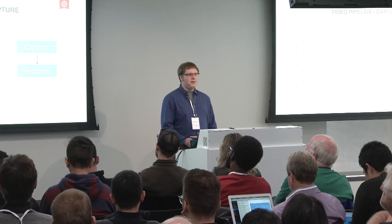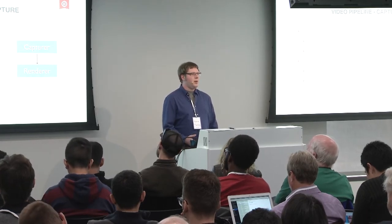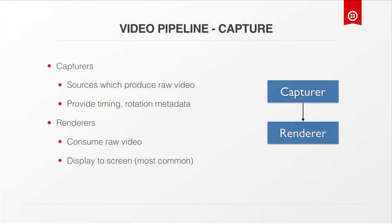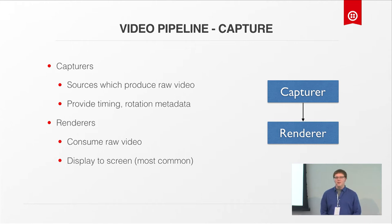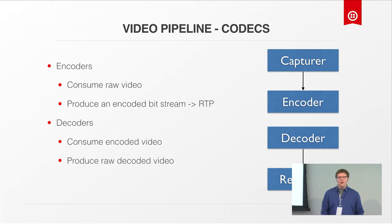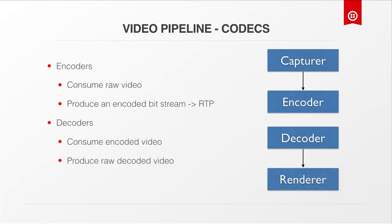Moving on to the video pipeline, starting with capture. Captures are sources which produce raw video along with timing information and metadata. Renderers consume raw video, usually to draw it to screen. Encoders consume raw video and produce an encoded bitstream you can transmit over the network using RTP. Decoders take encoded video, consume it, and produce raw decoded video which you might send to a renderer to display.